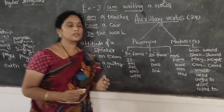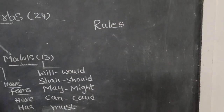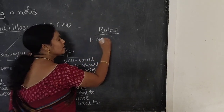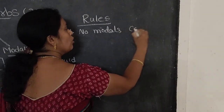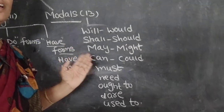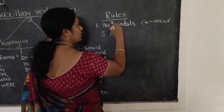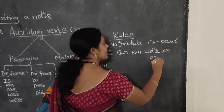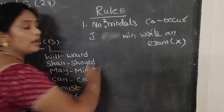Here we have some rules for using the modals. The first rule: no two modal auxiliaries can be used at a time. No two modals co-occur in a sentence. That means we cannot say 'I can will write the exam' — that is wrong. You have to use only one auxiliary.